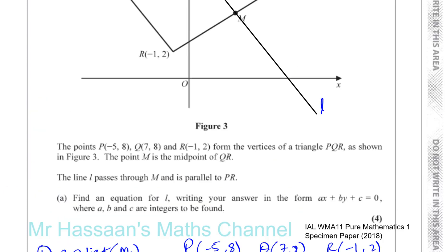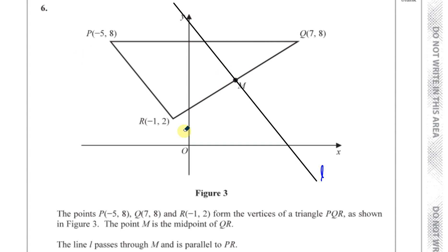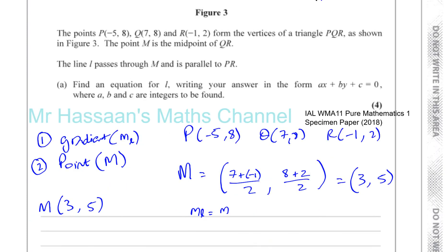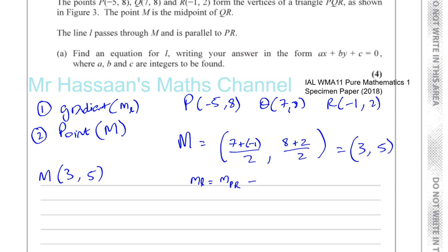Next we find the gradient of the line. The gradient of line L equals the gradient of line PR, because they are parallel — parallel lines have the same gradient. The gradient of PR is (8 − 2) / (−5 − (−1)) = 6 / (−4) = −3/2.